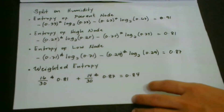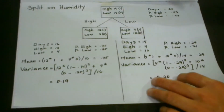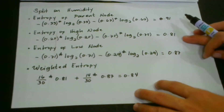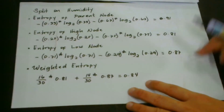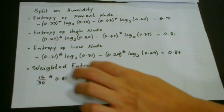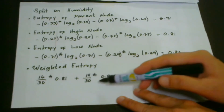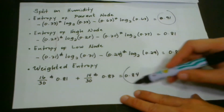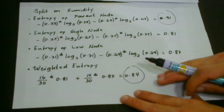For the entropy calculation on the humidity split, the entropy of the parent node is the same: 0.91. We plug in 0.75 and 0.25 for the high node and get 0.81. For the entropy of the low node, plugging in 0.29 and 0.71, we get 0.87. The weighted entropy is 16/30 times 0.81 plus 14/30 times 0.87, giving us 0.84. Since 0.84 is lower than 0.91, the child nodes are purer than the parent node.